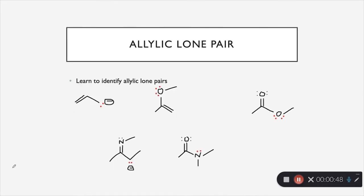In our first pattern we have an allylic lone pair. Remember that allylic means you have a lone pair that is one carbon away from a double bond. You can see the double bond there and we have a lone pair one carbon away from that. In all of these examples this is the case — whether it's a carbon or an oxygen that has a lone pair, they're all one carbon away from a double bond.